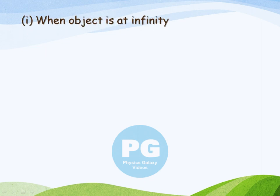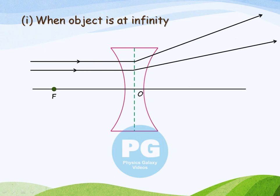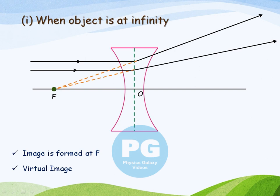Let's start the image formation. When the object is at infinity, the rays of light coming in are parallel to the principal axis, and after refraction they both become diverging, since it's a diverging lens. For an observer looking from this side, these two rays appear to be coming from a common point — that is the principal focus on the same side of the lens from where the rays are coming. So these two refracted rays appear to meet at this point, or appear to come from this point. So we say the image is formed at focus, and it is a virtual image, and it is highly diminished — or say it is point-sized.